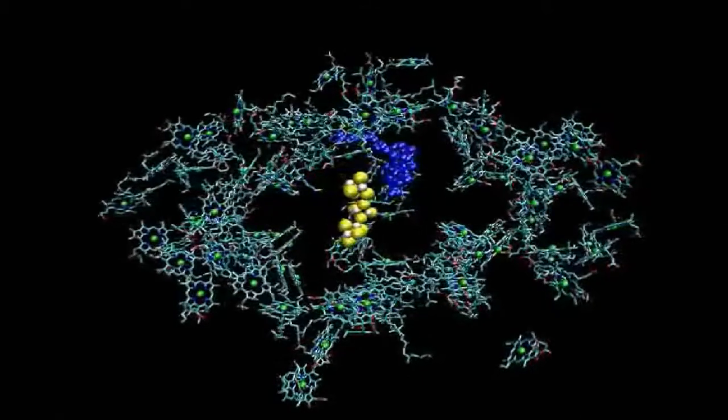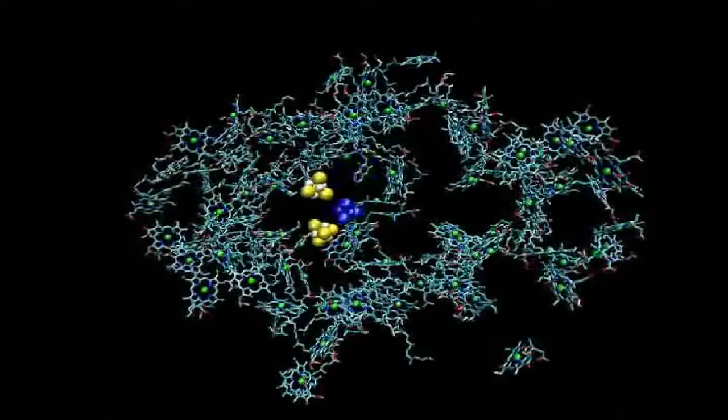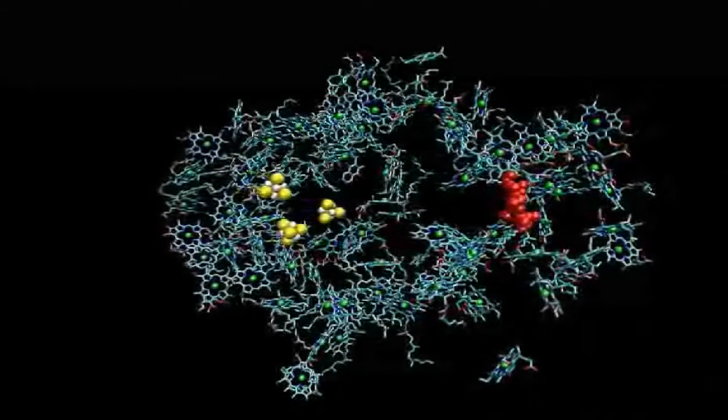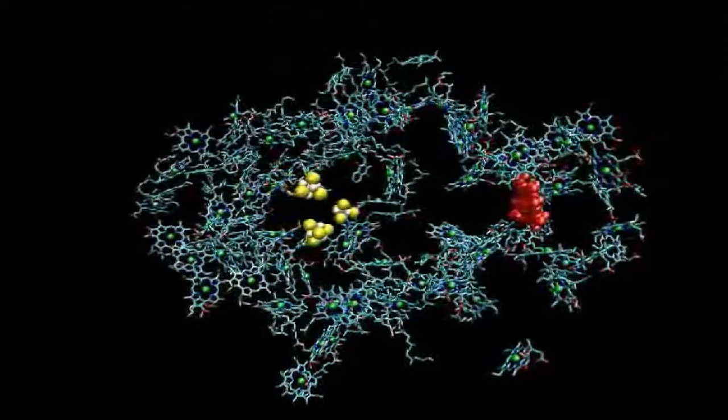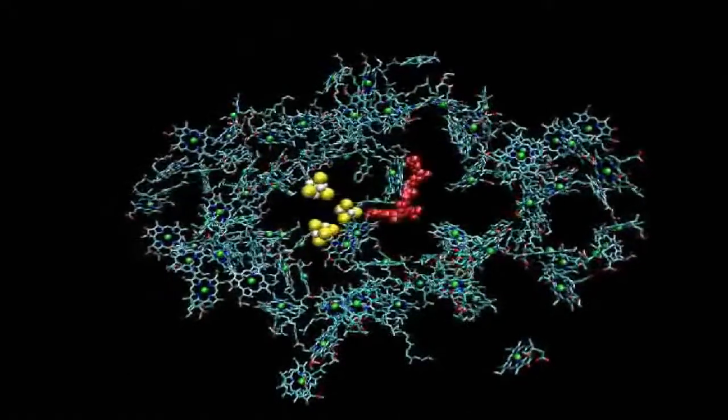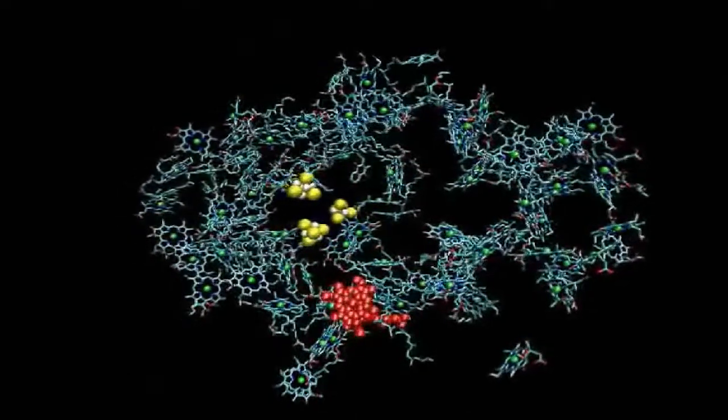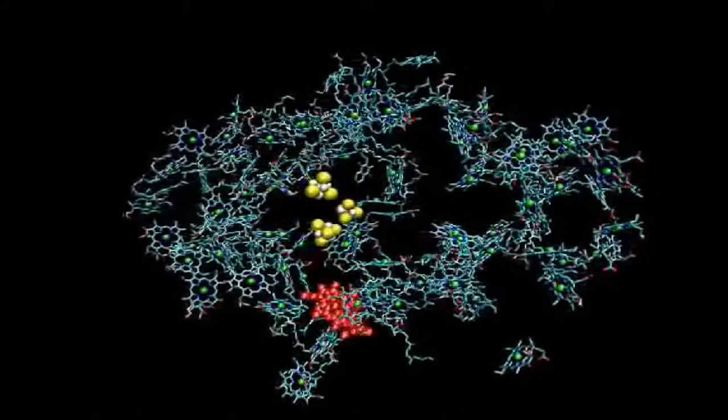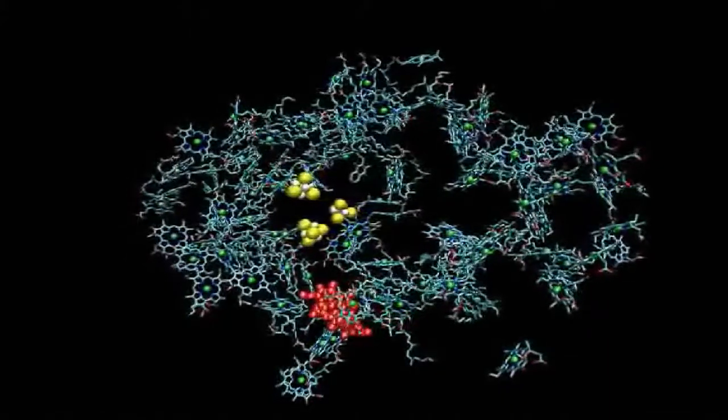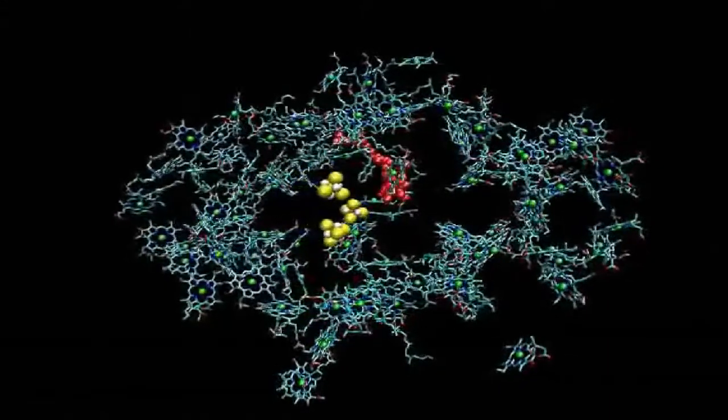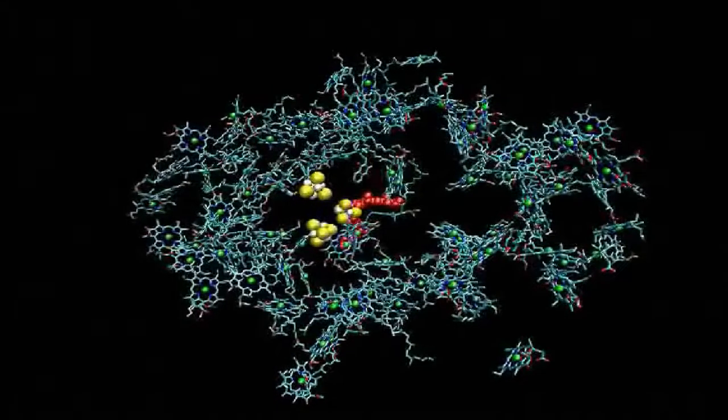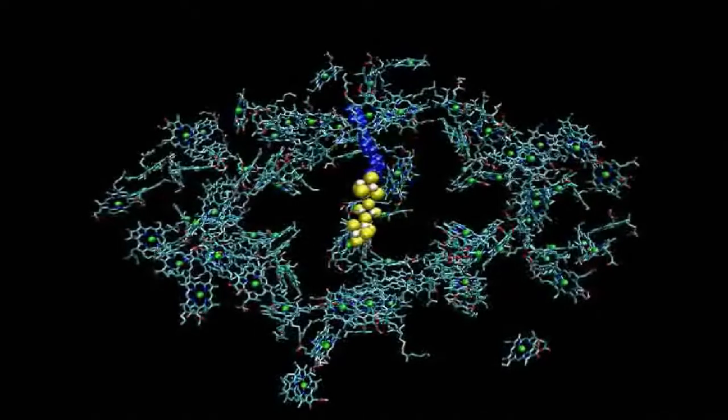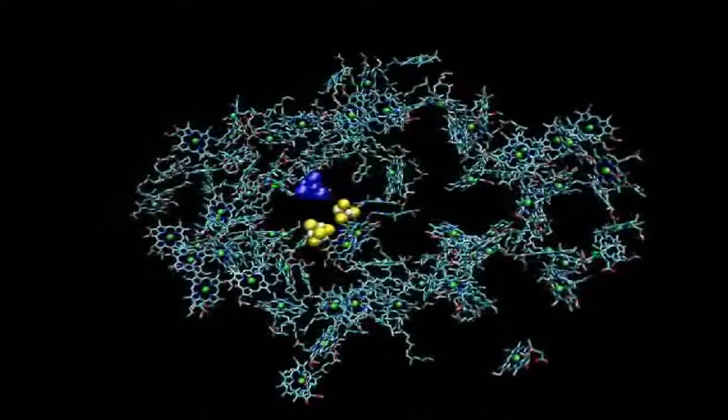This one is quickly caught by the reaction center chlorophylls. This one moves around a bit, gets stuck in this part of the antenna complex. The energy moves back and forth between a couple of molecules, then eventually breaks free, finds its way to the reaction center chlorophylls, and then via electron transport, electron movement, the energy moves to the quinones, the iron-sulfur complexes, and out.